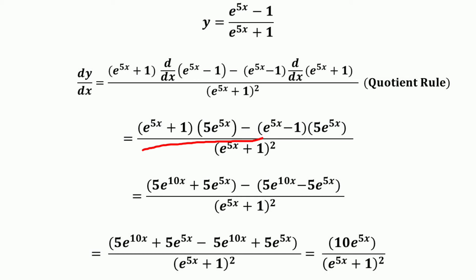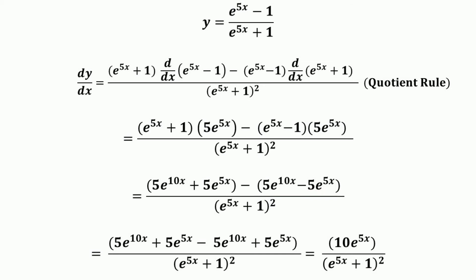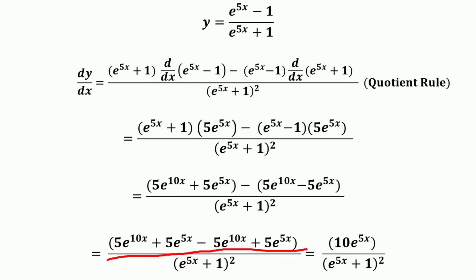Expanding the numerator: e raised to the power 5x + 1, multiplied by 5e raised to the power 5x gives 5e raised to the power 10x plus 5e raised to the power 5x. Then e raised to the power 5x − 1, into 5e raised to the power 5x gives 5e raised to the power 10x minus 5e raised to the power 5x. This is divided by the denominator squared, e raised to the power 5x + 1, squared.